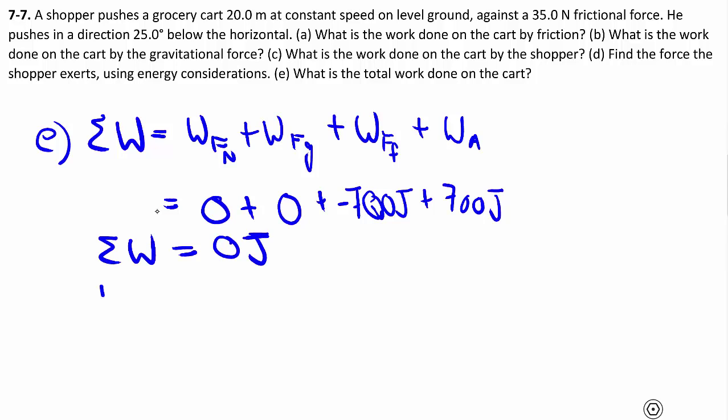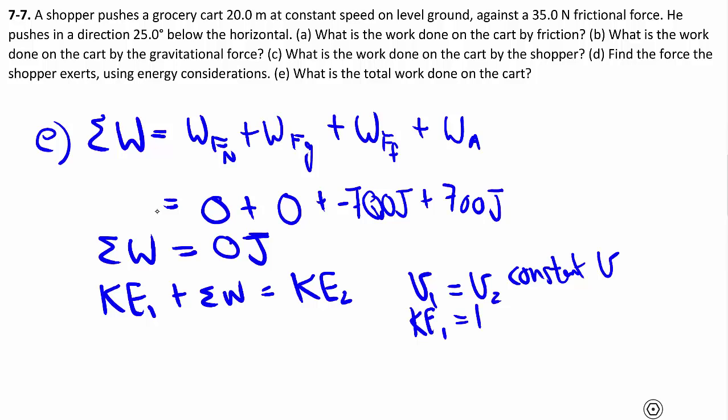Which is not surprising, knowing how work changes energy. In this case V1 and V2 must be the same because we have constant V. So KE1 must equal KE2, being 1 half mV2. Therefore the total work must be zero. That was never really in question anyways.